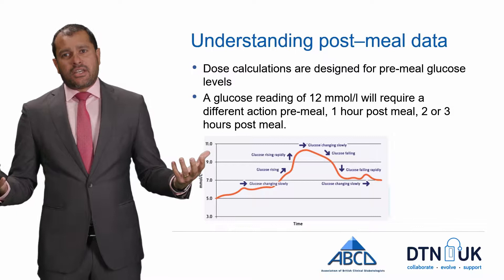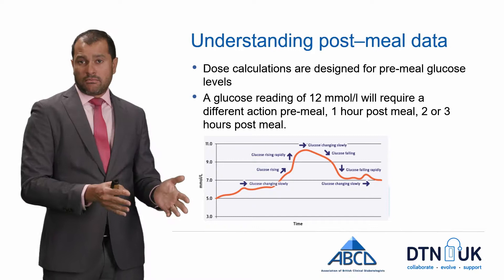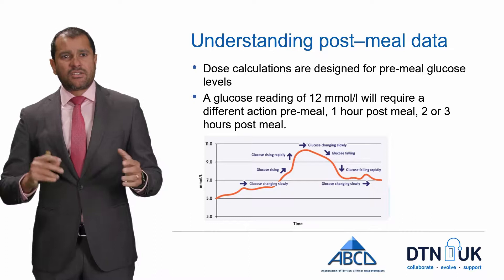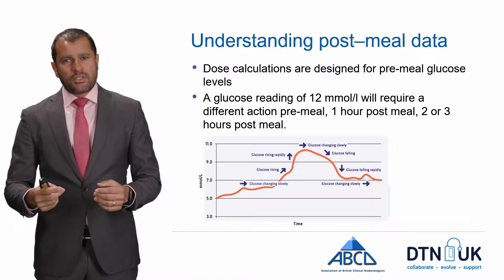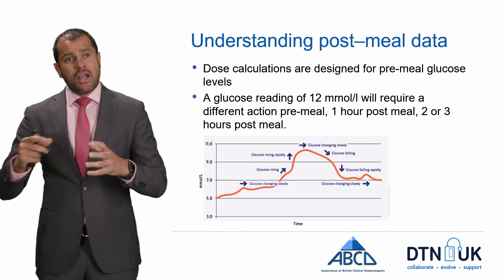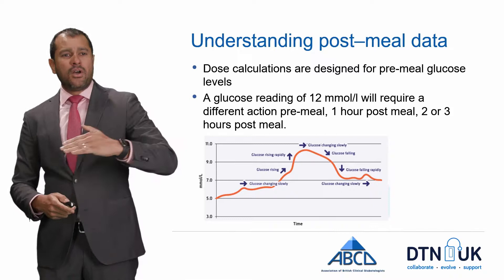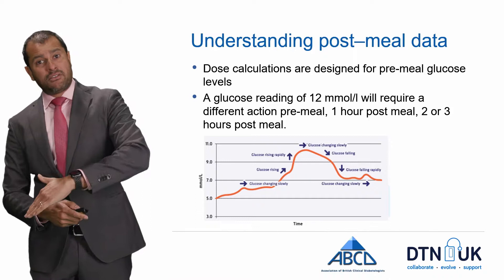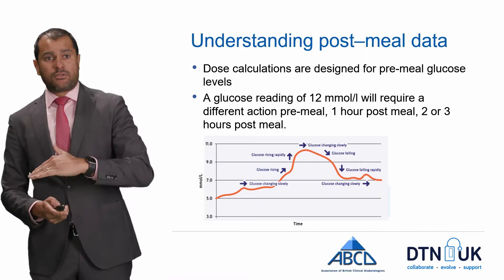With finger prick testing, most readings were pre-meal, but with the Libre most of the information it gives you is after meals. You can start thinking about how to use that data to make proper decisions, because a blood glucose of 12 will lead to a different action depending on whether it's before a meal, one hour after, two hours after, or three hours after. It's about understanding what those arrows and blood sugars mean at different times post-meal.